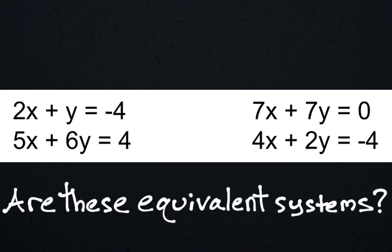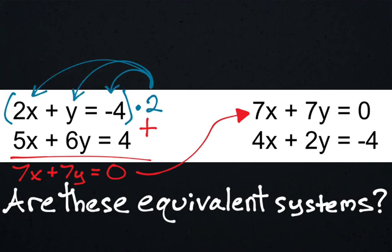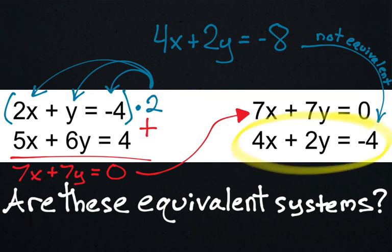Now let's see if you can apply all of that learning on the last two practice problems. Are these equivalent systems? Yes or no? Pause the video. If you added the two equations together, you would find that 2x plus 5x is 7x, y plus 6y is 7y, and negative four plus four is zero — that is the top equation. But for the bottom equation, if you multiplied it by two, 2x times two is 4x, y times two is 2y, and negative four times two is negative eight. That is not the same thing printed in the second system — it says negative four, but we got negative eight. That means these are not equivalent systems.